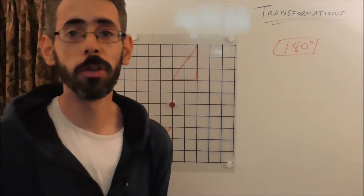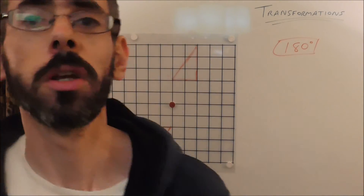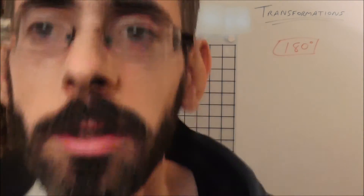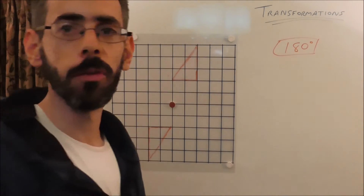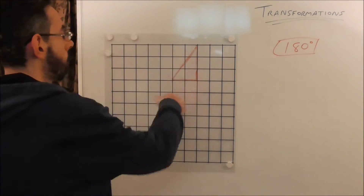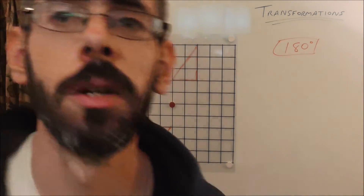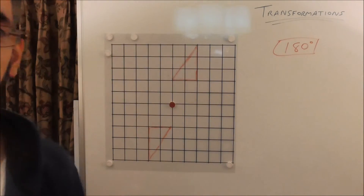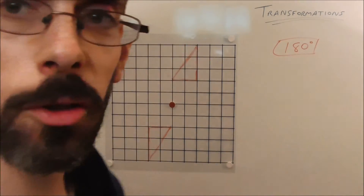Now, what if you don't have tracing paper, or you don't want to use tracing paper? Well, there is another method for rotating shapes 180 degrees which is really quick. This is method two. This really only works for 180 degree rotations.